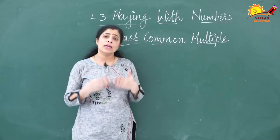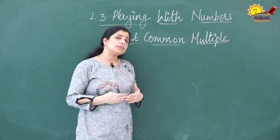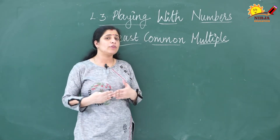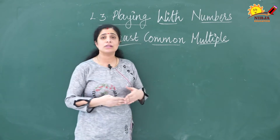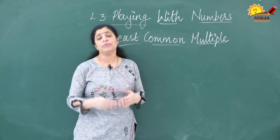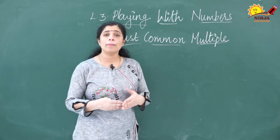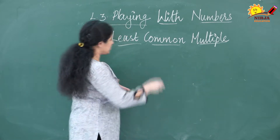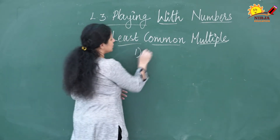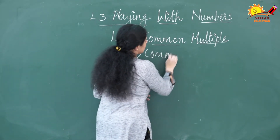To find the LCM of the numbers, three methods are there. We are going to discuss these three methods in detail. The first method is the common multiple method.